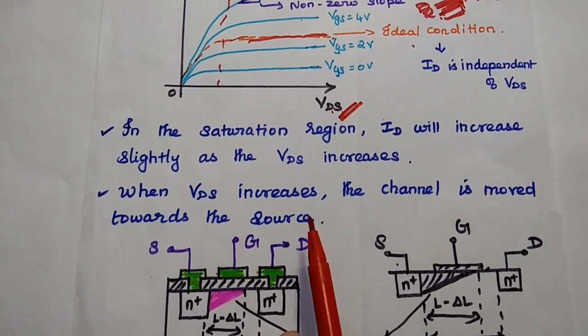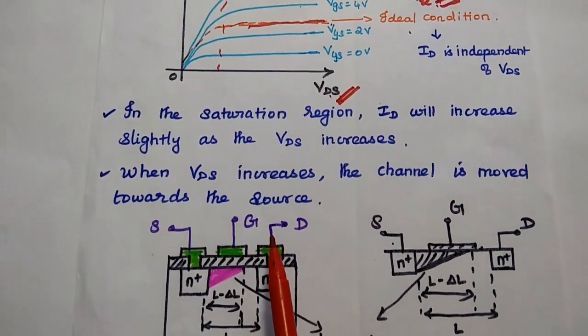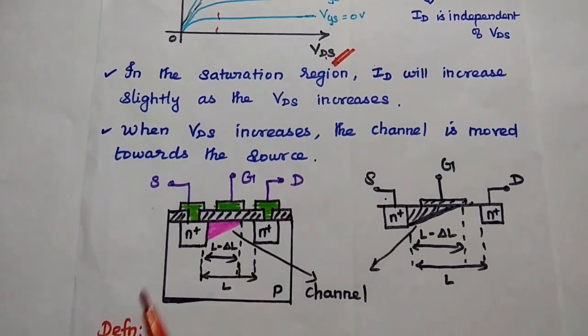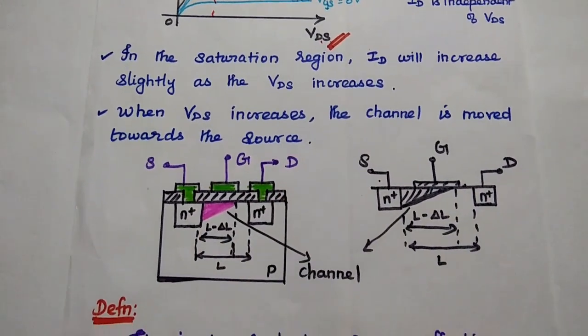When VDS increases, the channel is moved towards the source, or we can say it is away from the drain.